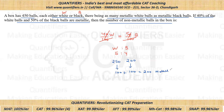200 total metallic balls. And the question says find the number of non-metallic balls. Total balls are 450, out of which 200 are metallic balls. So non-metallic balls are 450 minus 200, which gives us 250 as the correct answer.